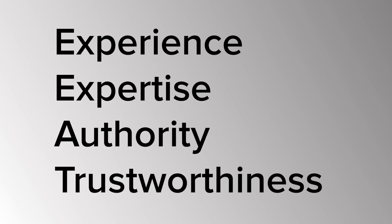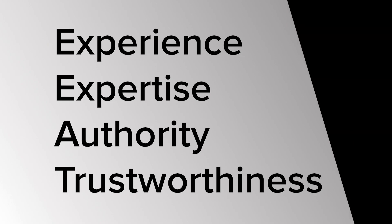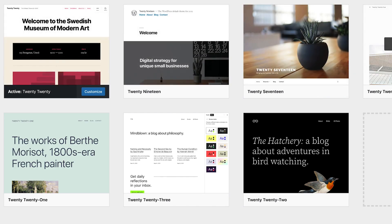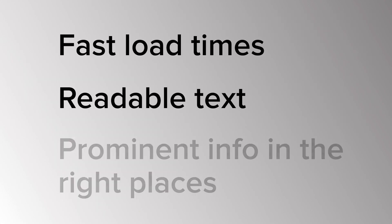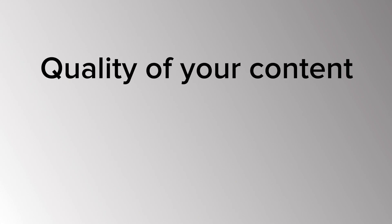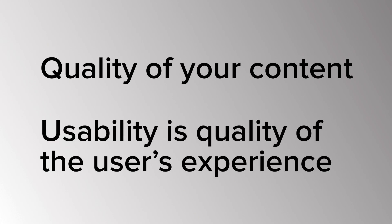Google released a set of guidelines for quality content, abbreviated as EEAT — experience, expertise, authority, and trustworthiness. If your content fulfills all these criteria while also answering your reader's questions, you'll rate highly in the quality department. Another important factor is usability — what kind of experience does your website provide to users? Optimizing things like a friendly design optimized for all devices — mobiles, tablets, and larger screens — fast load times, readable text, and showing prominent information in the right places will improve your usability. Quality deals with the information on your website, while usability deals with the experience your website provides.